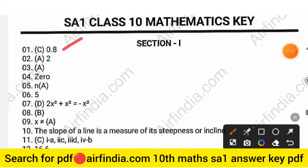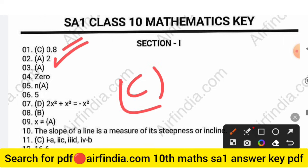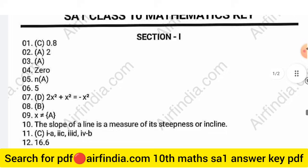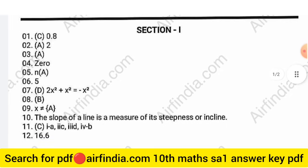Question 1: correct option is C, which is 0.8. Question 2: correct option is A, which is 2. Question 3: correct option is A. Question 4: correct answer is 0.